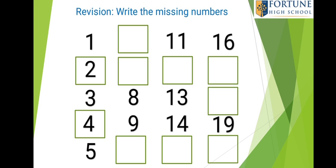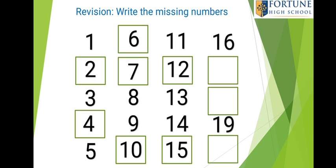What number comes after 5? Yes, it is 6. Then 7, 8, 9, 10, 11, 12, 13, 14, 15, 16, 17, 18, 19, 20.